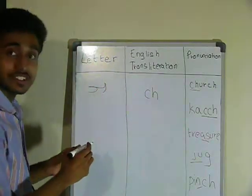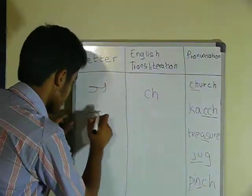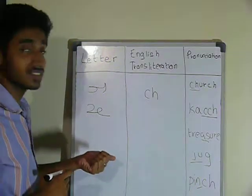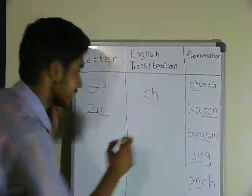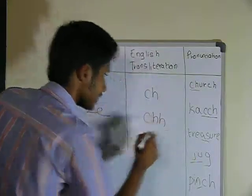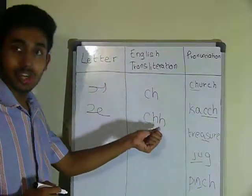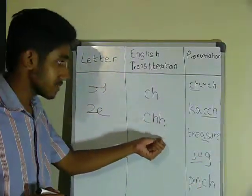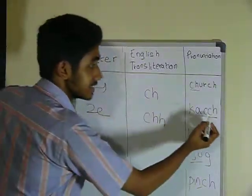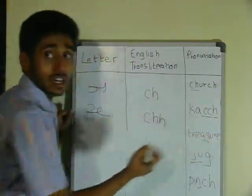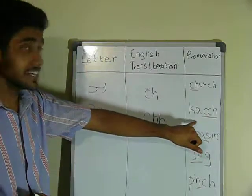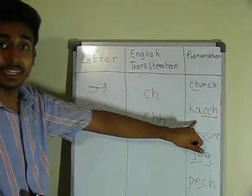The next letter is CH. Its English transliteration is CH and H. Its pronunciation is same as CH in Kutch. Kutch is a state in Gujarat, India.